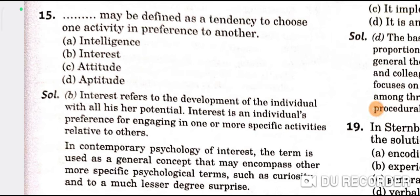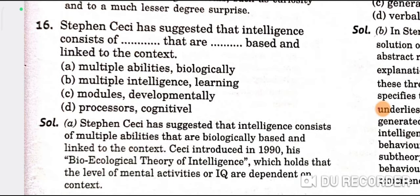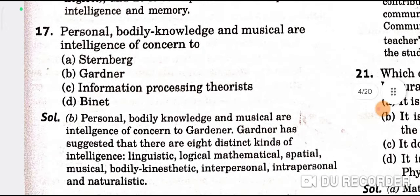Question 15: A tendency to choose one activity in preference to another is called interest — B is the correct option. Stephen Ceci has suggested that intelligence consists of multiple abilities that are biologically based and linked to the context — A is the correct option. Question 17: Personal, bodily-kinesthetic, and musical are intelligences of concern to Gardner — B is the correct option.